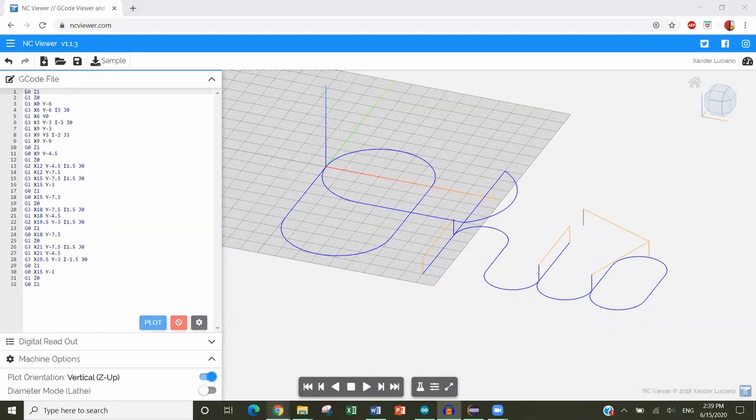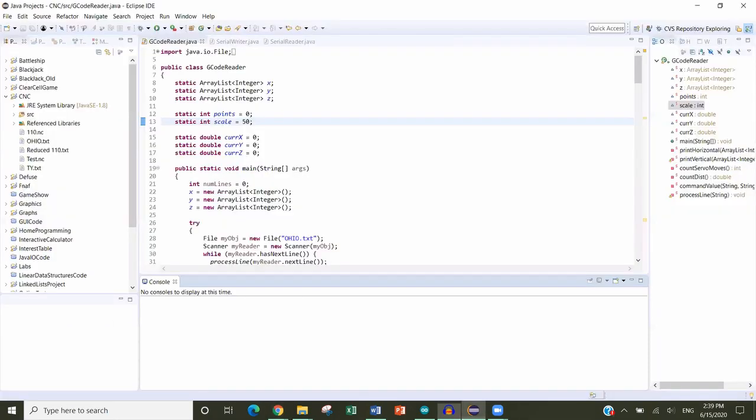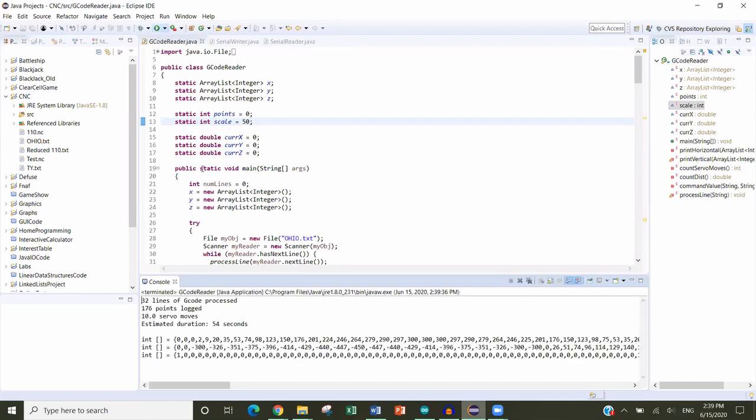To run the machine, we first start with a gcode file for our design. Because the Arduino can't directly read text files, I use a Java program to parse the gcode line by line and output an array of coordinate points.